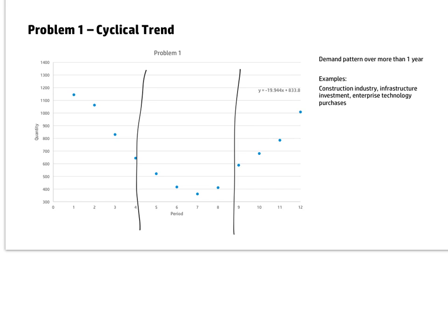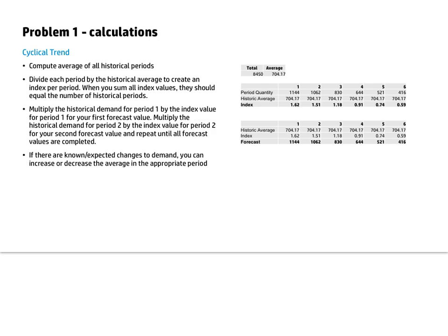So that's a cyclical trend. How do we forecast something like this? The first thing we want to do is compute our average of the period. We had 12 periods here; the total in the practice exam is 8,450. We divide by 12 and our average is 704. Then we divide our period quantity by our historic average to come up with an index value — so period 1 at 1,144 is 1.62 times the historical average.